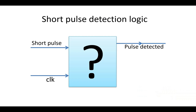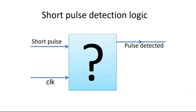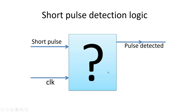Before going into the solution, let us revise our problem statement. The challenge is on your screen where you have to design a short pulse detection logic. This unknown module, which you have to design, takes two input signals: one is a clock signal and another is a one-bit input signal. A short pulse will be given on this input signal — its duration will be quite less compared to the clock period. For example, if the clock period is 10 nanoseconds, the short pulse will be only 2 nanoseconds.